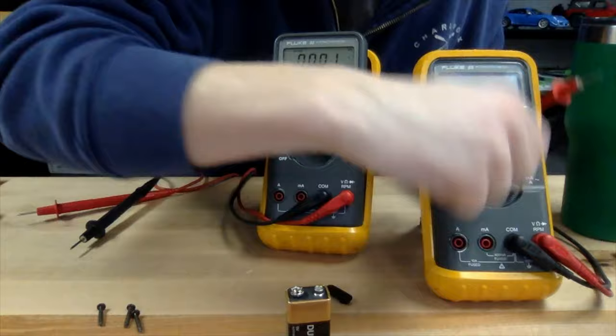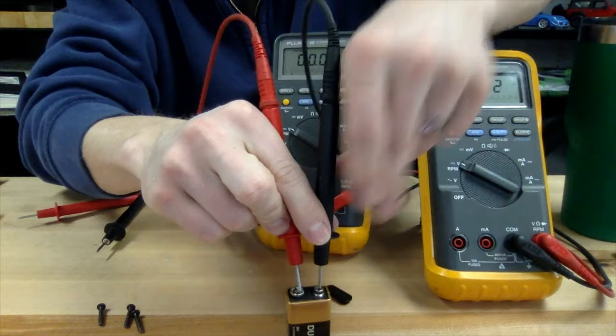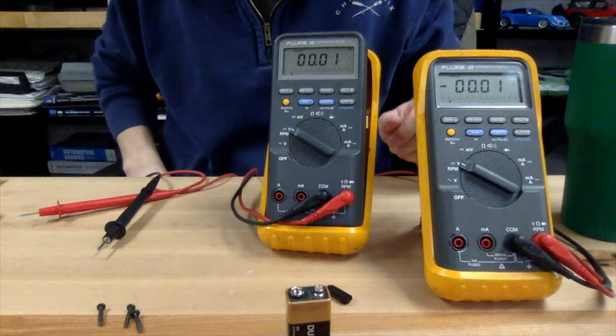We'll check it with our known good multimeter, and you'll see that we've got 9.6 volts. So what's up with that? We'll dig a little deeper and see why this multimeter is not reading any voltage.